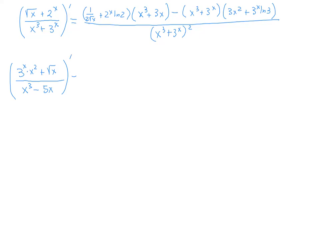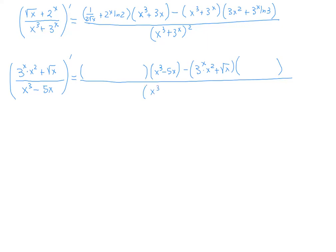I'm going to apply the same principle: prepare a parenthesis for the derivative of the numerator, times the denominator, minus the numerator times a parenthesis for the derivative of the denominator, over the denominator squared. In other words, I place all the things I know in advance — everything not involving derivatives — and now I know the derivative of the numerator goes in the first parenthesis and the derivative of the denominator in the second.